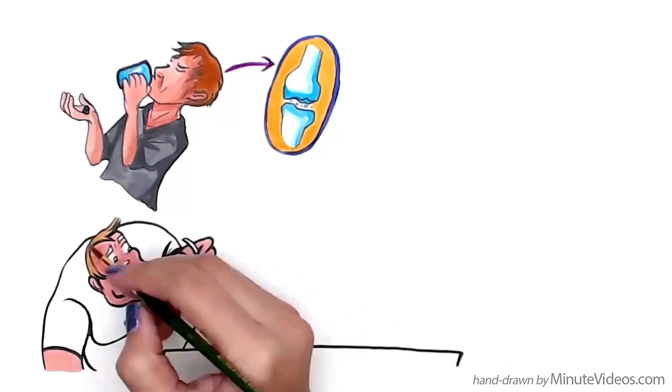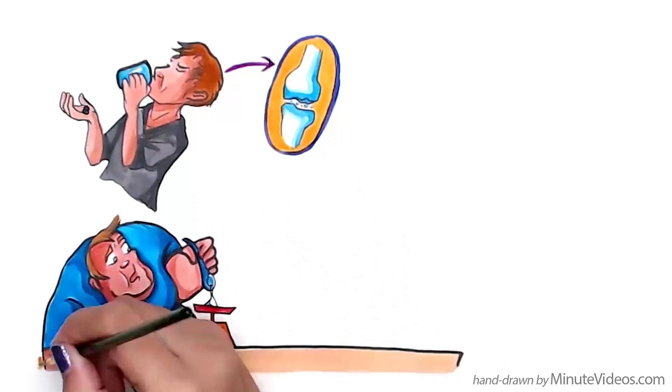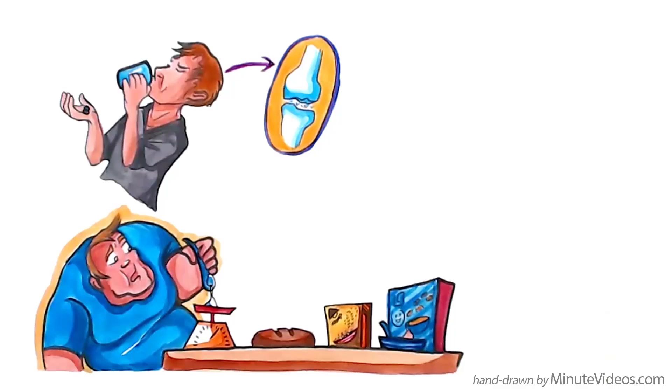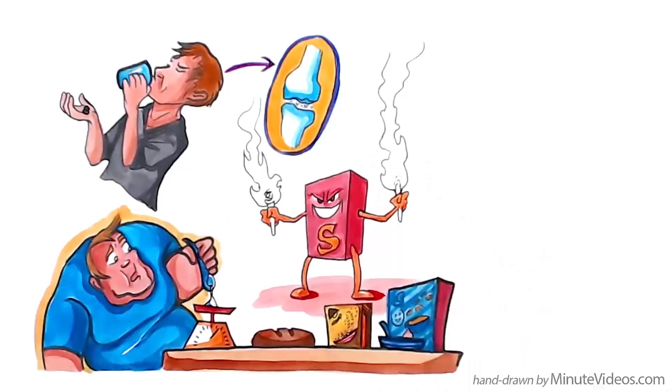For overweight individuals it is important to reduce sugar, including bread, rice and breakfast cereals, which helps to lose weight and reduces inflammation. Sugar itself produces inflammation in the body.